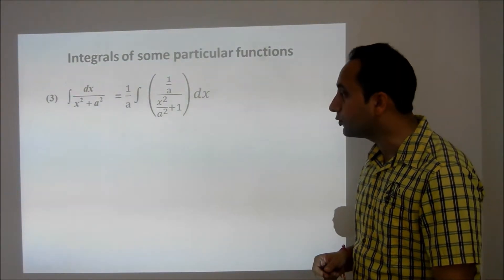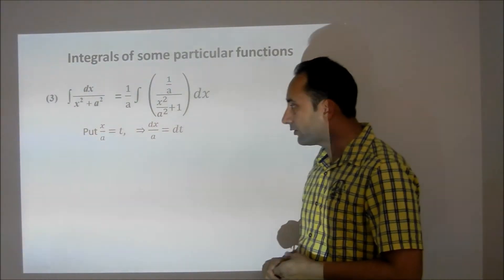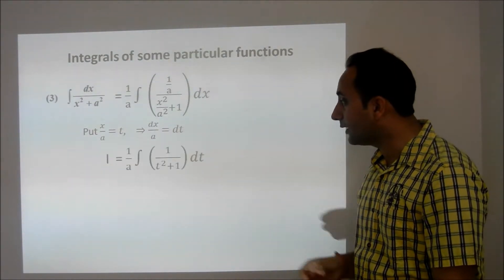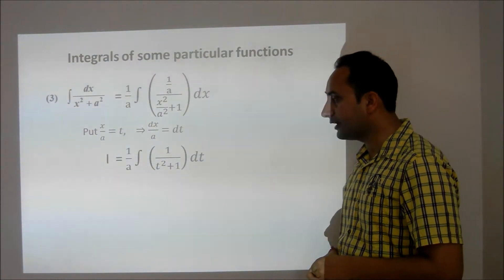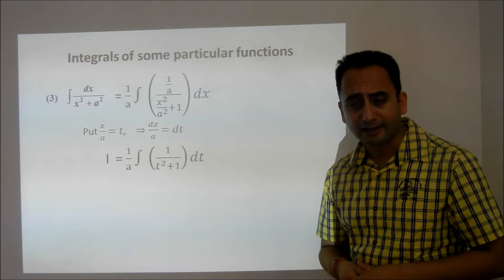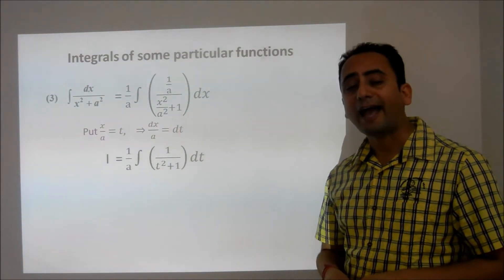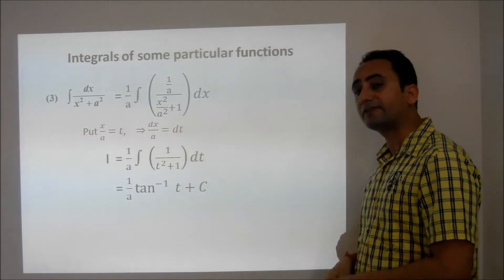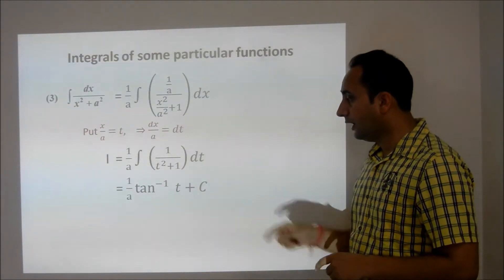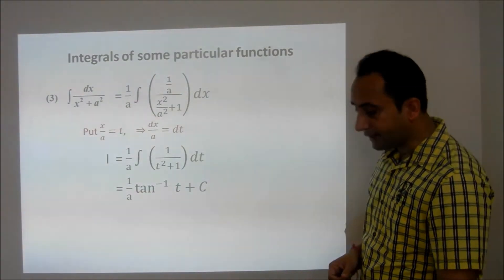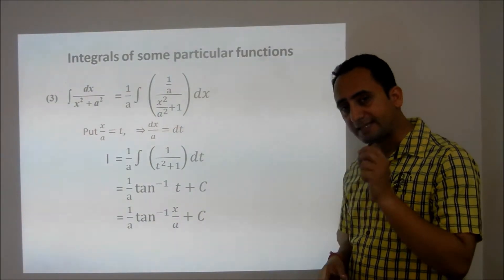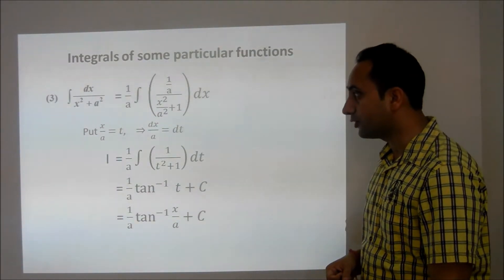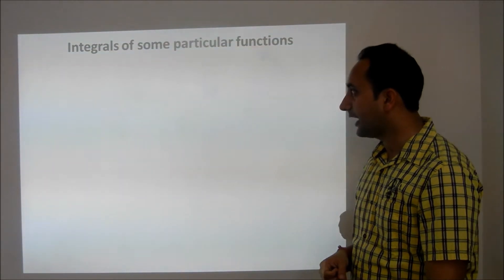I will substitute x upon a equals t. Differentiating both sides gives dx upon a equals dt, so the integral becomes 1 upon a times integral of 1 upon t squared plus 1 dt. This integral is the direct formula for tan inverse t. So the integral equals 1 upon a tan inverse t plus constant. Substituting back, the result is 1 upon a tan inverse x upon a plus c. This is the third particular integral.